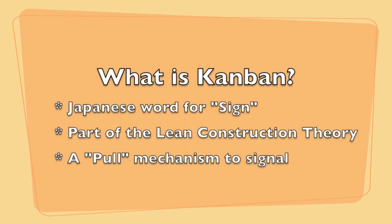The Japanese word Kanban literally translates to 'sign' or 'billboard.' Kanban is part of the Lean Construction Theory. It is used in production systems to help determine what to produce, how to produce it, and when to produce it. Kanban is a pull mechanism that signals the supply chain that an immediate action is required, and this action is then achieved just in time.